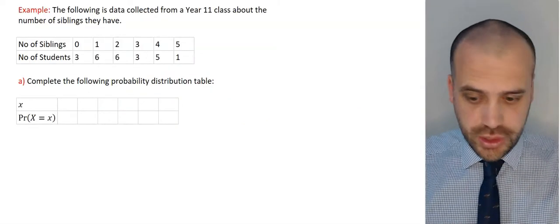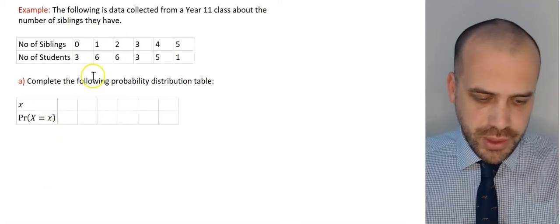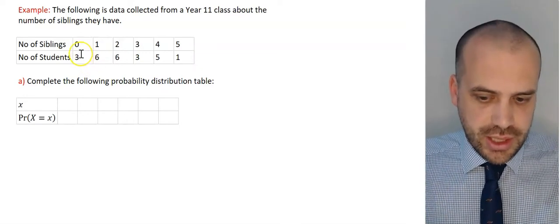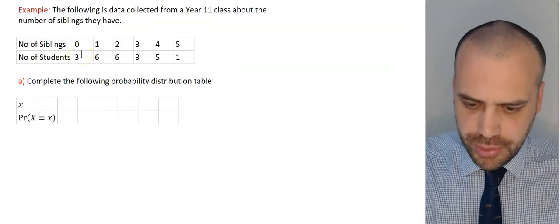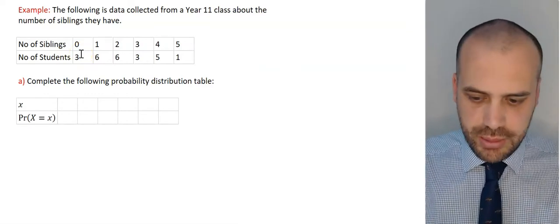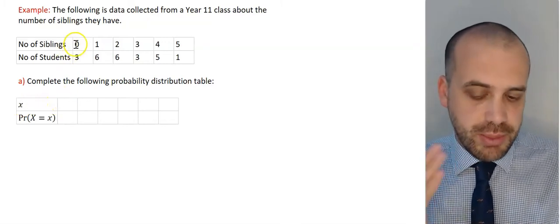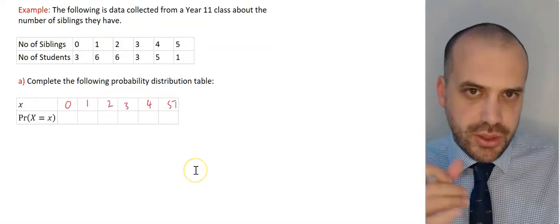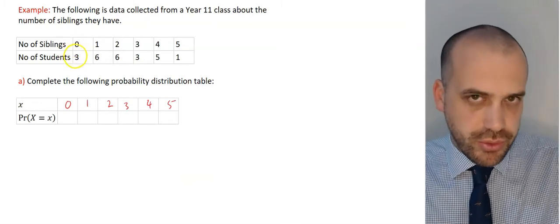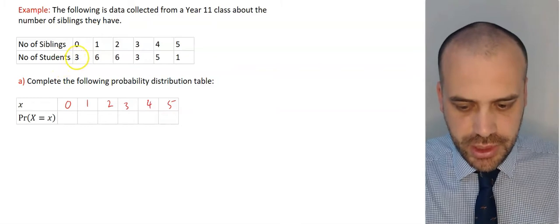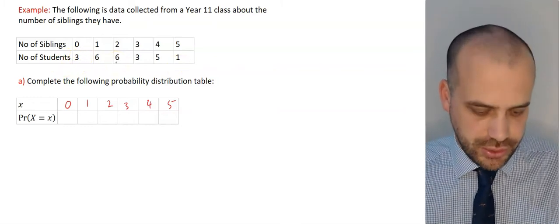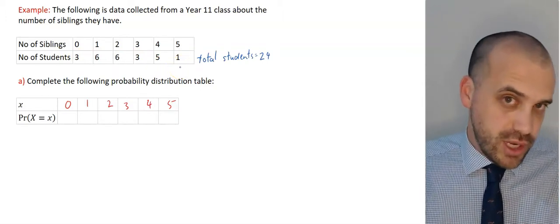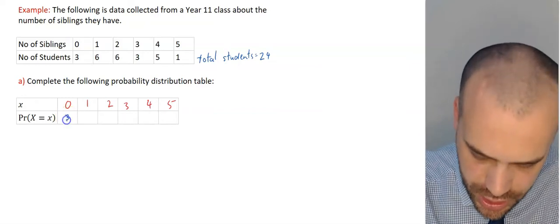Now that we've done that, let's do a question. This question is a little different because the previous one was about theoretical probability flipping coins, whereas this is data collected from a class on how many siblings they have. We need to complete the probability distribution table. The x values — the number of siblings — range from zero to five. Three students had zero siblings, and there are 24 students total, so the probability of having zero siblings is 3 in 24, which simplifies to 1 in 8.